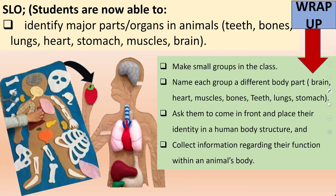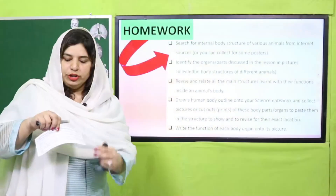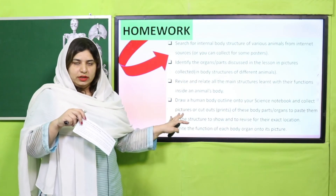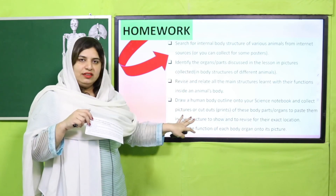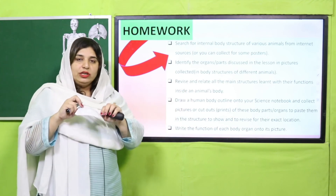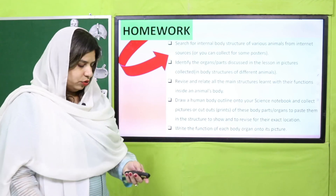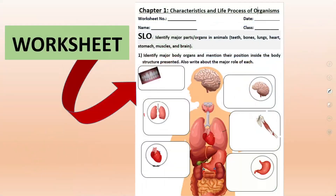For homework, make questions related to today's lesson. Students will paste the same copies of similar material on their copies since this content is related to their book. These are questions related to today's lesson. Also, a worksheet is available in which students have to identify different organs and present them according to the questions given.